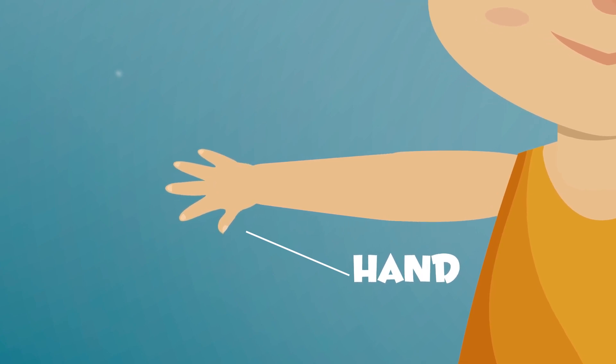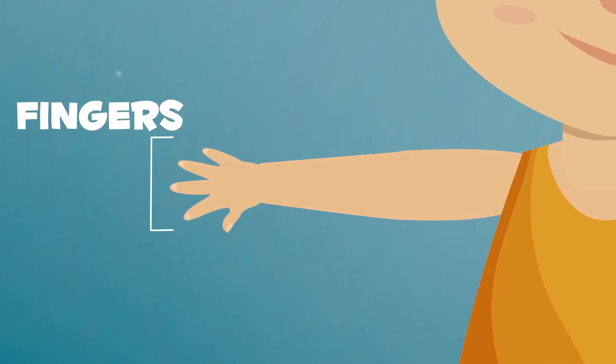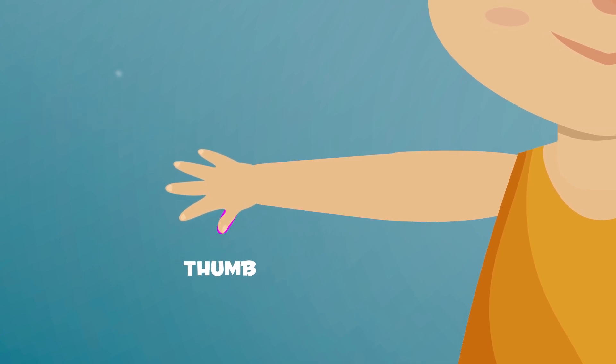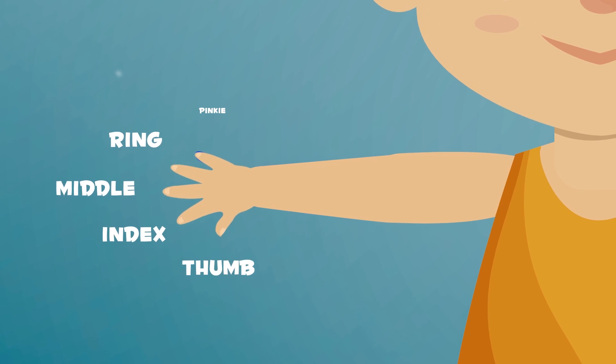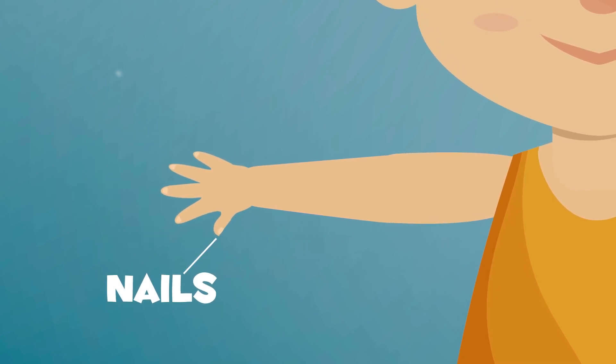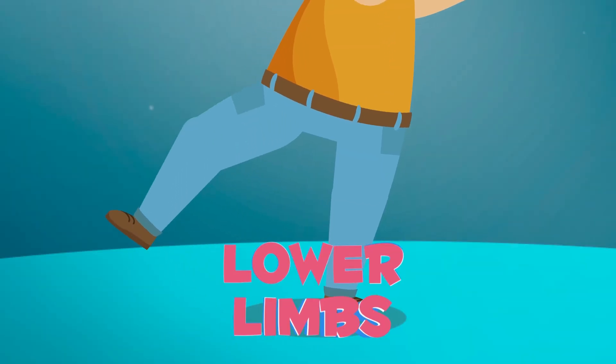You have five fingers on your hand: your thumb, index finger, middle finger, ring finger, and pinky. Your nails are the hard part that you can find at your fingertips.